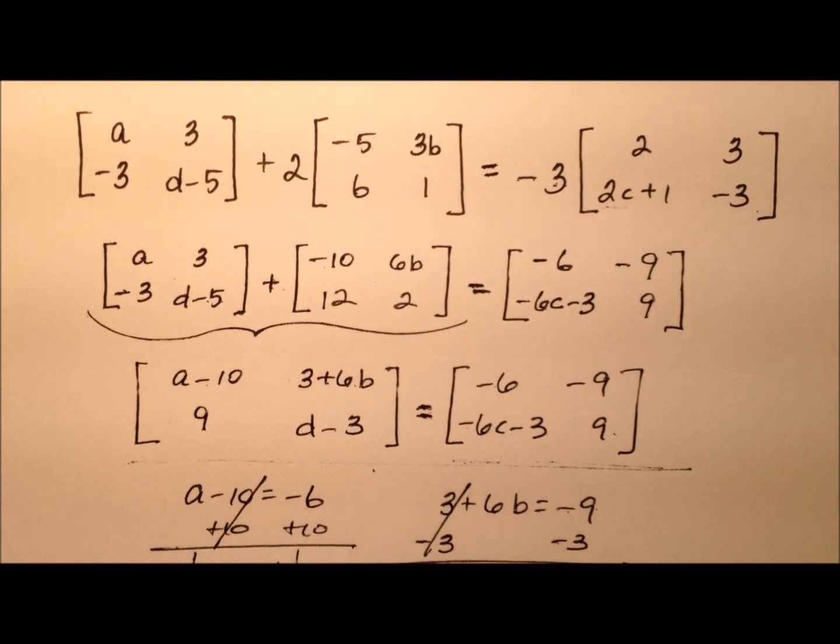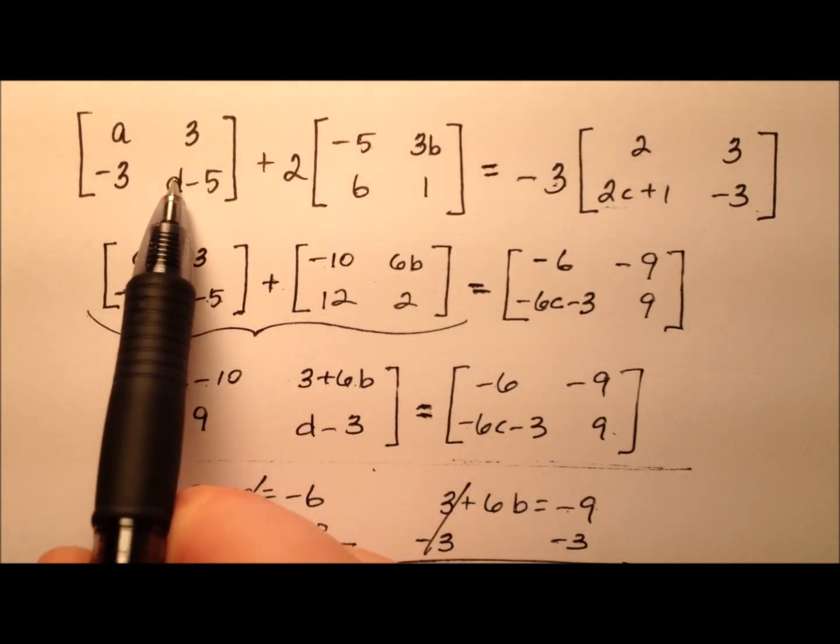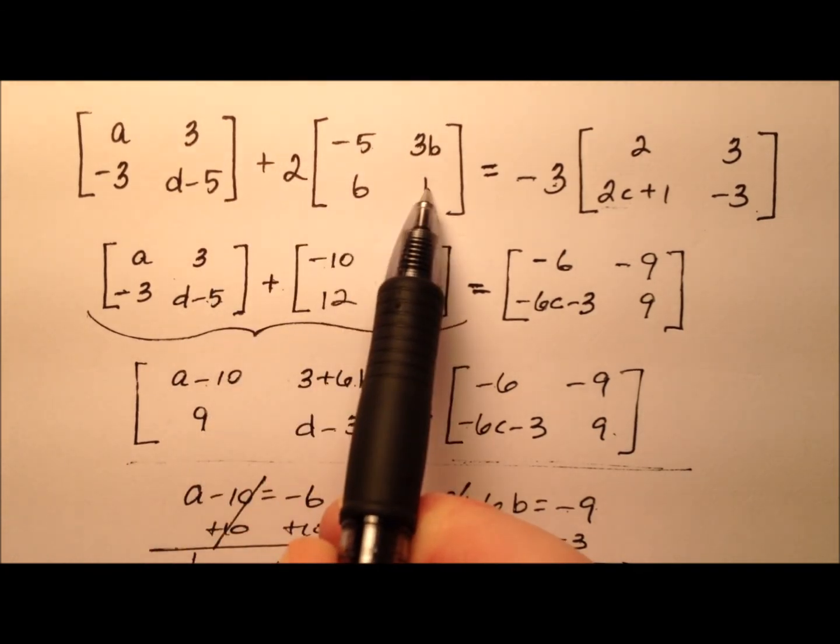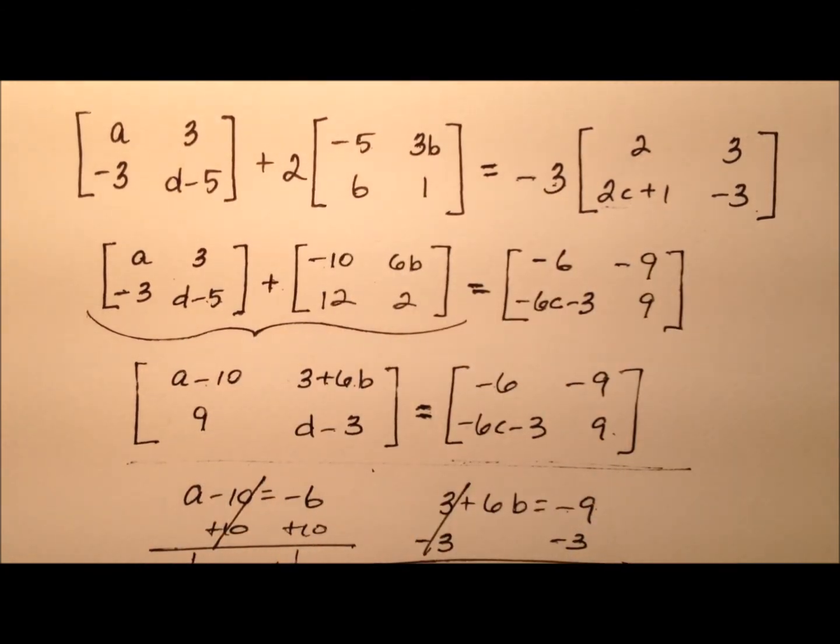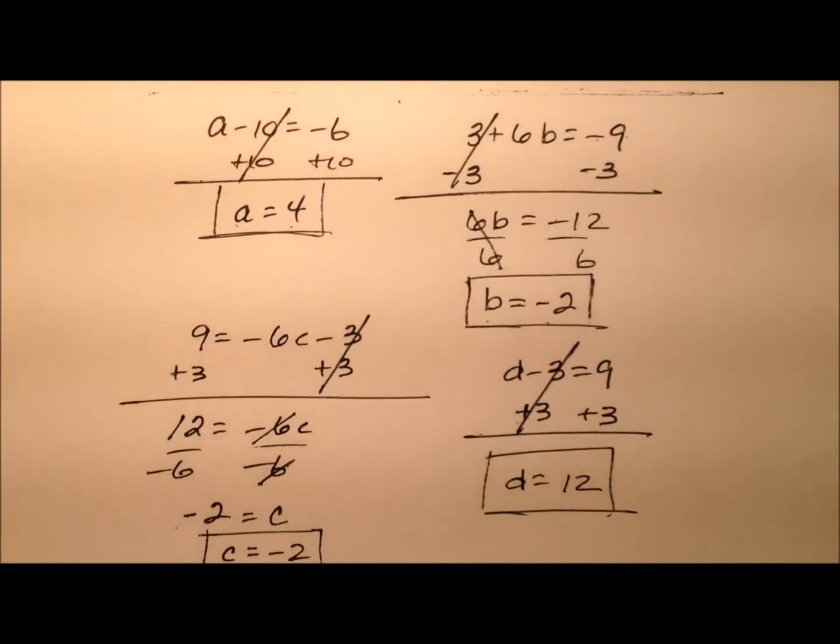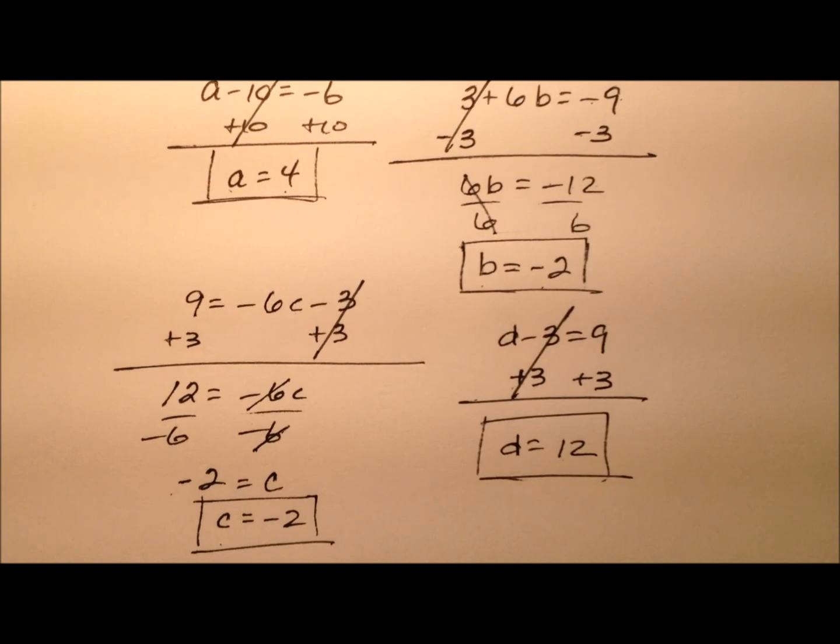We said the value for D was 12. So 12 minus 5 is 7, and then plus 2 should be 9, and negative 3 times negative 3 is 9. So we're good to go. So given that equation, here are the values for our variables.